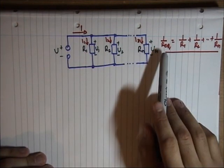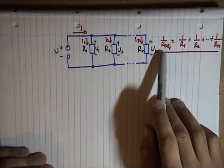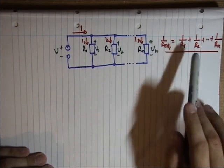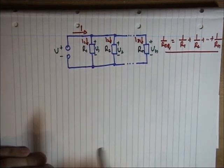Essentially I'm going to show that the reciprocal of the equivalent resistance is the sum of the reciprocal of the resistances of each individual element.